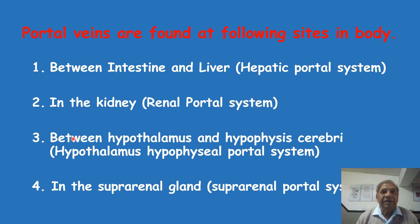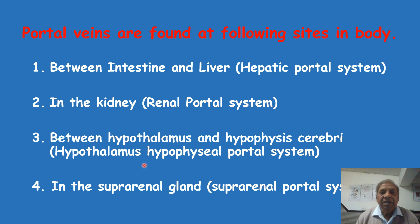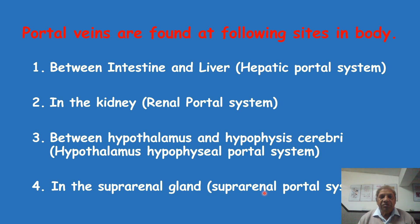The third site is between the hypothalamus — part of the brain — and the hypophysis cerebri, which is the pituitary gland. This is called the hypothalamo-hypophysial portal system of veins. The fourth and last place is in the suprarenal gland, where the portal vein extends between the cortex and medulla of the gland itself, called the suprarenal portal system. We will now learn about all four sites in detail to understand their special functions.